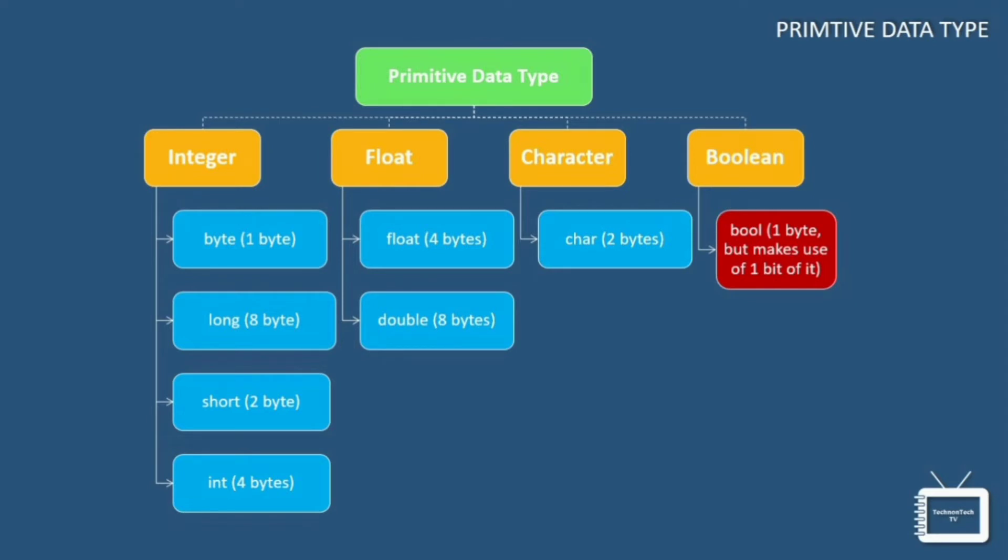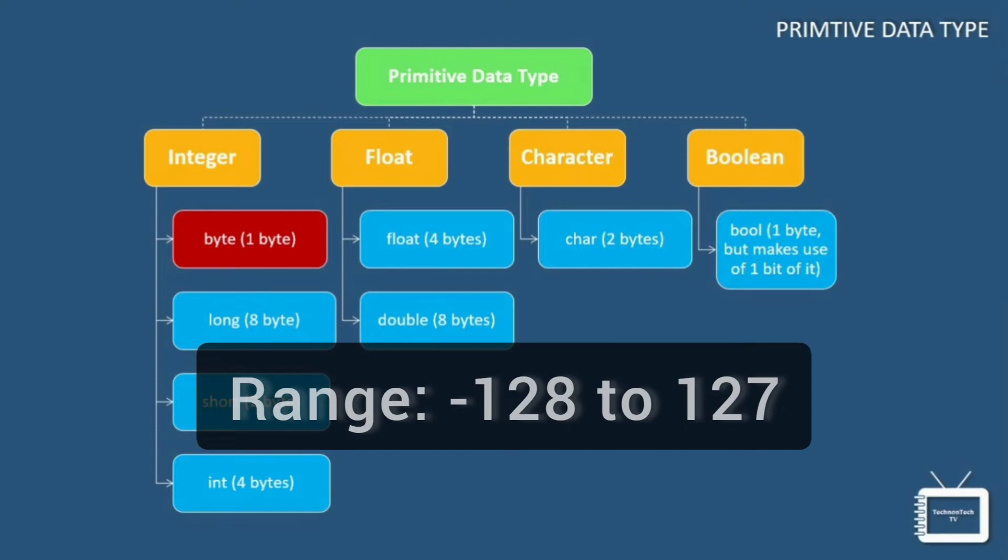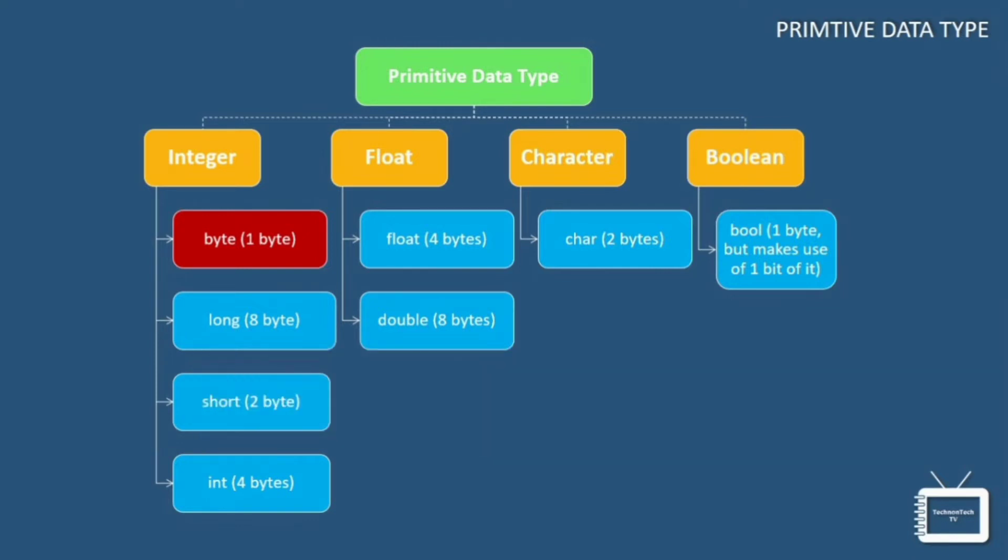So that was all about the boolean data type. I hope you understood it. Now let's move further and understand the next data type that is byte data type. Byte data type is an 8-bit signed 2's complement integer. It stores whole numbers that lie between minus 128 to 127. A byte data type is helpful for saving memory in large amounts.